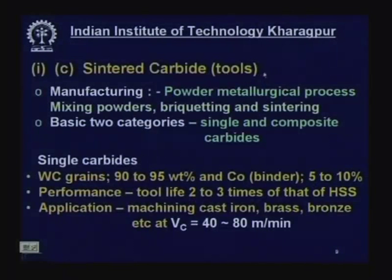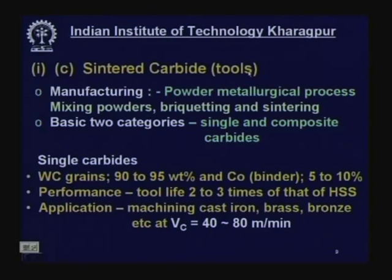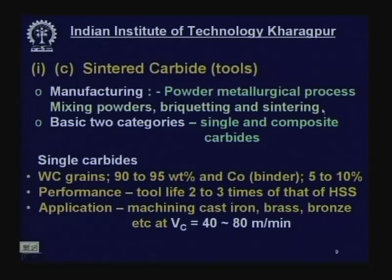Sintered or cemented carbide tools came around 1930 — a very great breakthrough in cutting tool history. These are produced by powder metallurgy as inserts or beads. The process involves mixing powders of tungsten carbide, cobalt, and some additives; properly mixing them; compacting in a die with a punch; and sintering at around 1200°C for about half an hour.